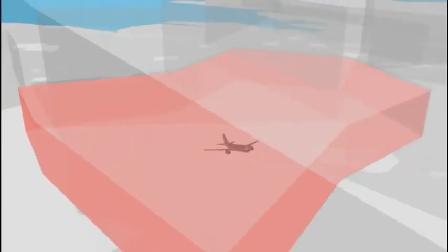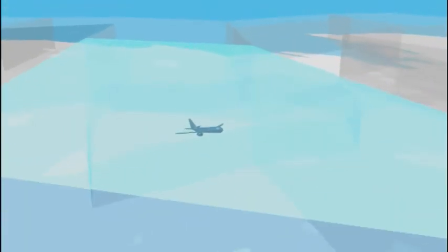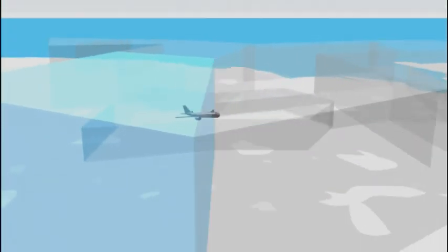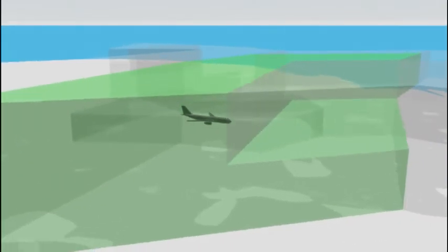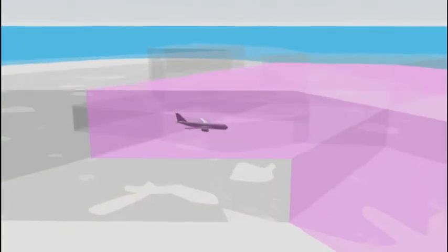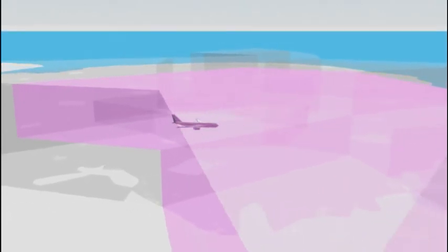Airspace is divided into sectors, each with its own team of air traffic controllers. A flight through UK airspace will go through a number of sectors, and be passed seamlessly from one team of controllers to another.